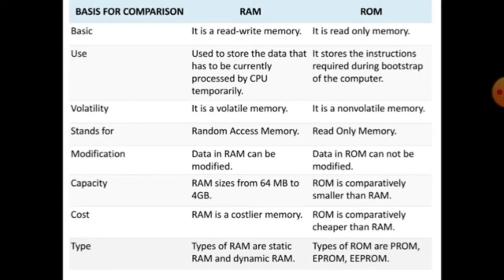Standards for - RAM is random access memory, whereas ROM is read only memory. Modification - data in RAM can be modified, we can change the data in RAM, whereas in ROM we cannot modify the data which we already saved. About capacity - RAM size is from 64 MB to 4 GB. This is the limit of RAM. ROM is comparatively smaller than RAM.